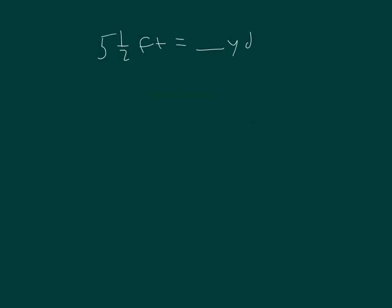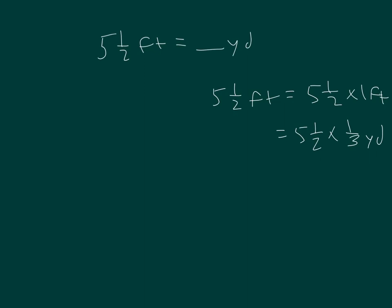The math looks very similar. Five and one-half feet equals how many yards? Five and a half feet equals five and a half times one foot, equals five and a half times one-third of a yard. That gives eleven-halves times one-third, which equals eleven-sixths, or one and five-sixths of a yard.